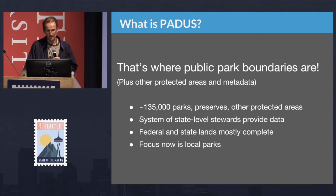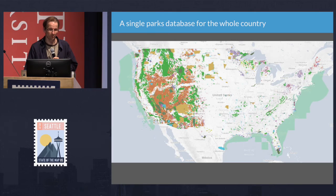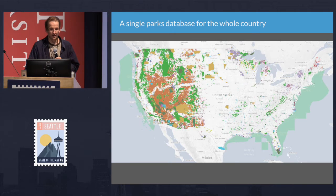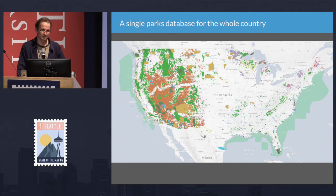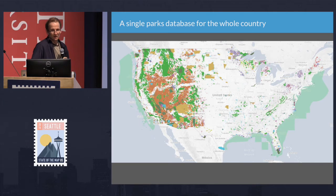The Trust for Public Land has several million dollars in funding to build out that dataset down to a much smaller park level across the whole country over the next two and a half years, so we can map public lands in an increasingly complete way with PAD-US.